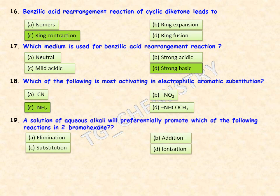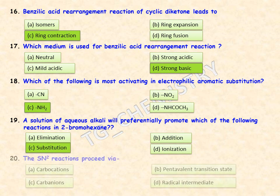A solution of aqueous alkali will preferentially promote which reaction in 2-bromohexane? Adding aqueous alkali to 2-bromohexane will preferentially give a substitution reaction, so option C — SN2 — is the right answer.